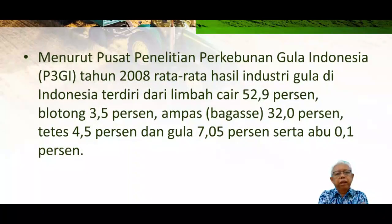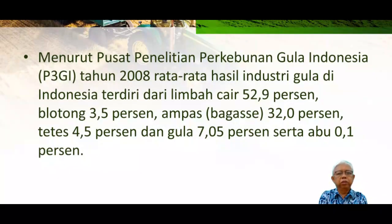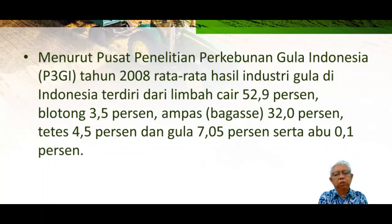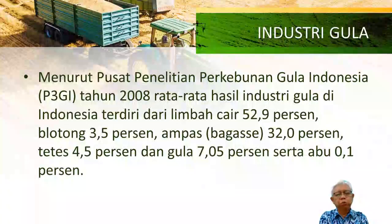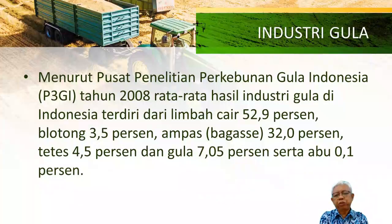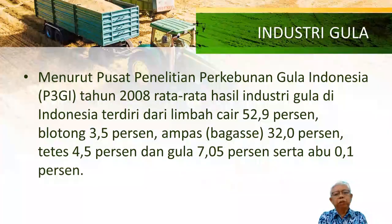Kalau kita bicara masalah industri gula, barangkali kita akan melihat bahwa produk gulanya sendiri — ini gula tebu ya — itu hanya sekitar 7%. Selebihnya ada air limbah sekitar 53%, blotong atau filter cake sekitar 3,5%, bagas atau ampas tebu sekitar 32%, kemudian tetes tebu atau molasis sekitar 4,5–5%, dan ada abu dari pembakaran bagas. Karena industri gula ini adalah industri yang self-sufficient energy, kebutuhan energinya disupply oleh biomass — dalam hal ini adalah bagas — yaitu sekitar 0,1%.